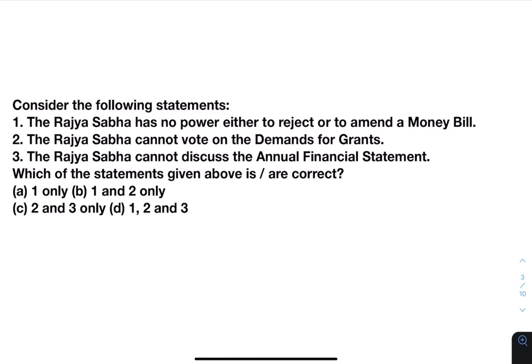Statement 3: the Rajya Sabha cannot discuss the annual financial statement — this is not correct. The Rajya Sabha can discuss the annual financial statement, and discussion does take place in Rajya Sabha regarding the budget. The annual financial statement is the Union Budget. So which of the statements given above are correct? Answer: 1 and 2 only.